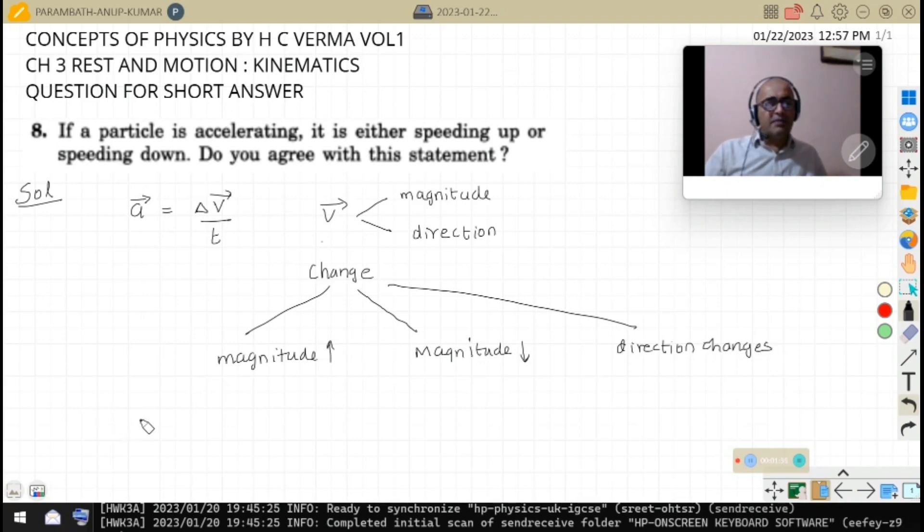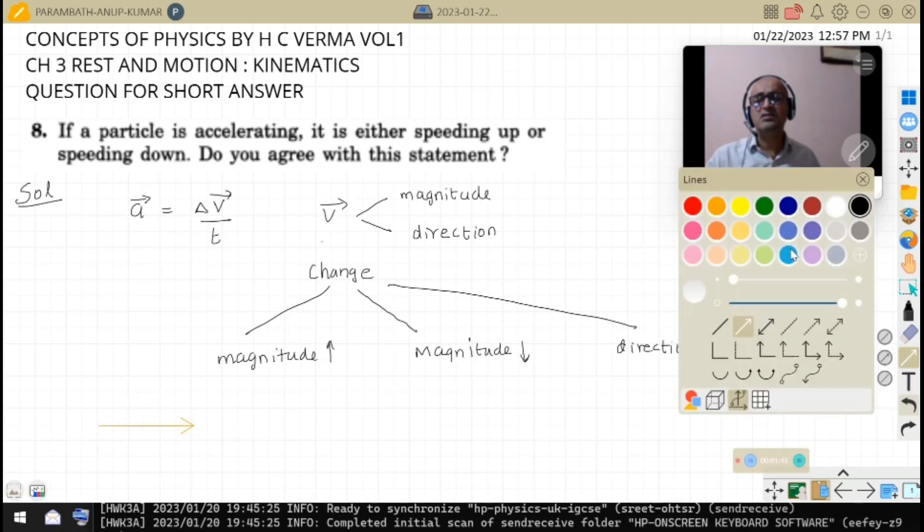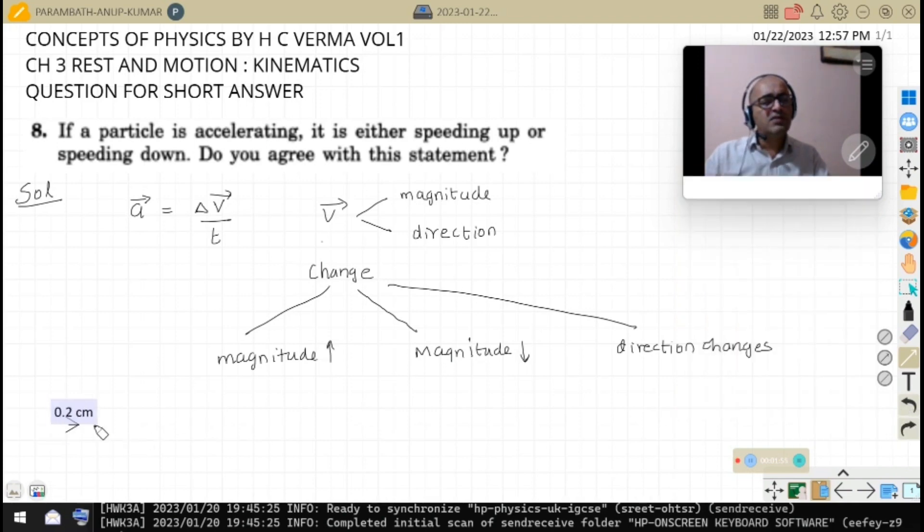A body can be moving like this. So first time it is having say 20 meters per second. First interval, one second interval.